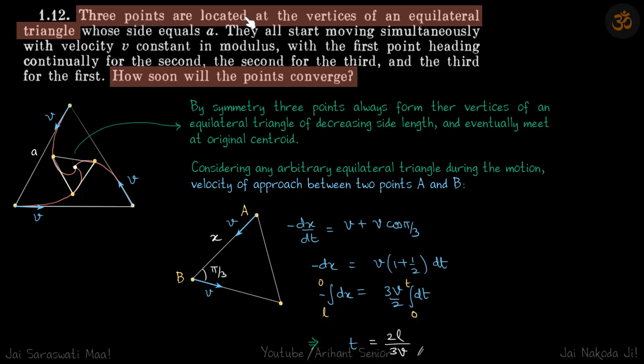Three points are located at the vertices of an equilateral triangle whose side equals A. They all start moving simultaneously with velocity V, with the first point heading continually for the second, the second point continually for the third, and the third point continually following the first. How soon will the points converge?